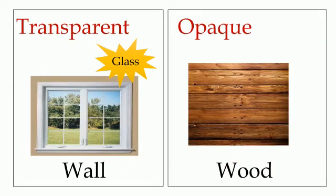Materials can be transparent, like this window. It is made of glass. Glass is transparent — we can see through it. Materials can be opaque, like this wood. We can't see through it.